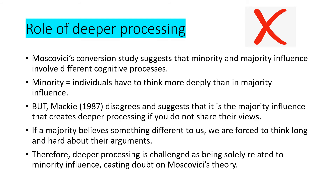A further limitation concerns deep processing. Moscovici's conversion study suggests minority and majority influence involve different cognitive processes — minority influence requires deeper thinking. However, Mackie (1987) disagrees, suggesting it is majority influence that creates deeper processing when we don't share their views, because a majority believing something different forces us to think hard about their arguments. This challenges the idea that deeper processing is solely related to minority influence, casting doubt on Moscovici's theory.